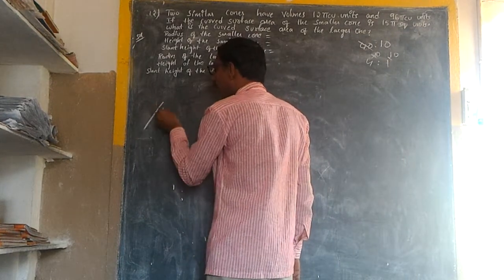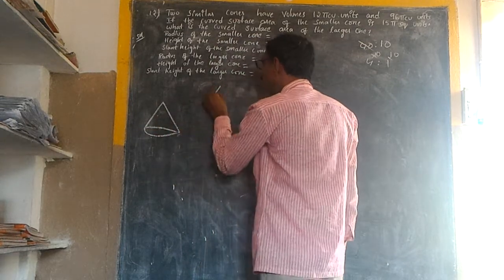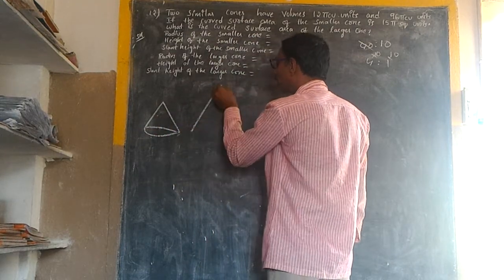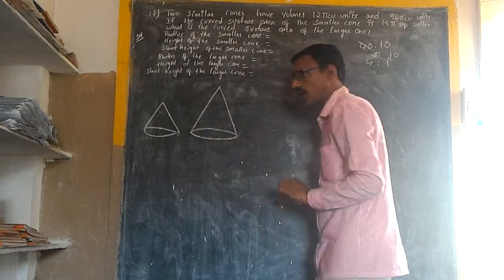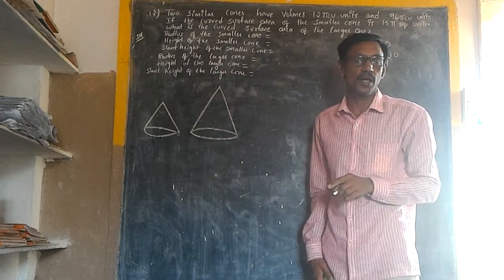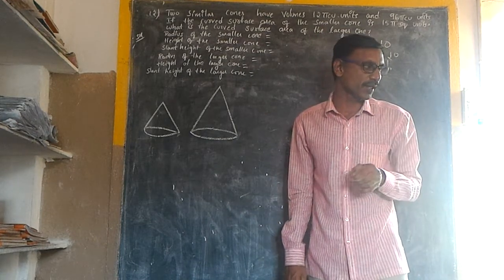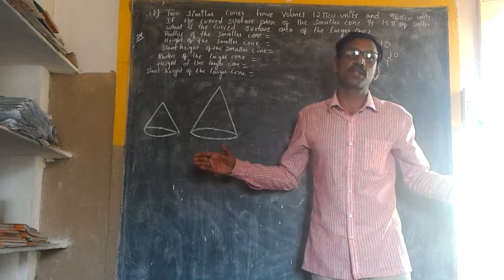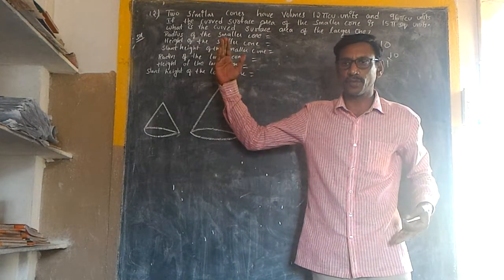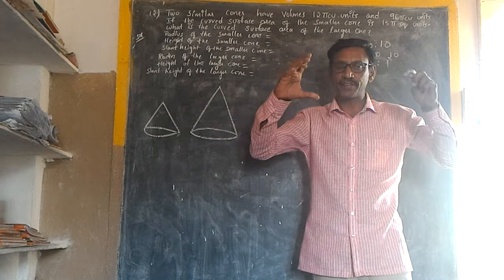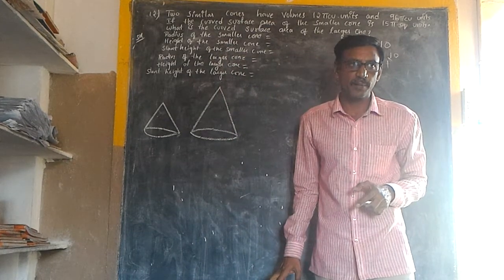Here we have a small cone and a large cone — similar to having a half-litre bottle and a one-litre bottle. They are the same shape, but the size is different.